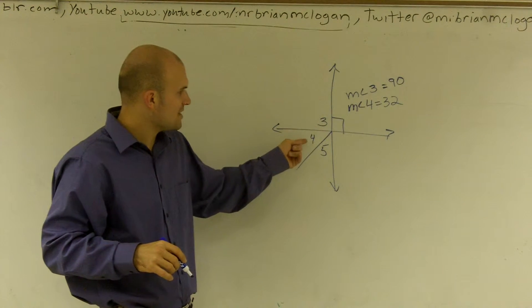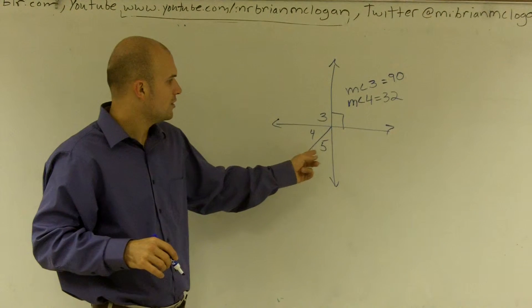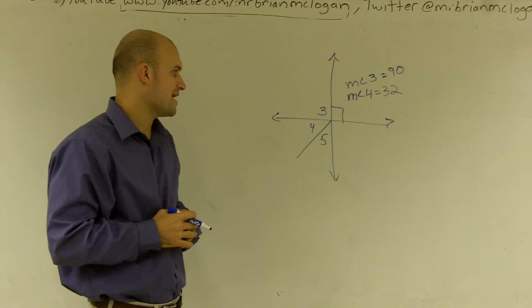So now it says, if measure of angle 4 is 32, we need to figure out what measure of angle 5 is.